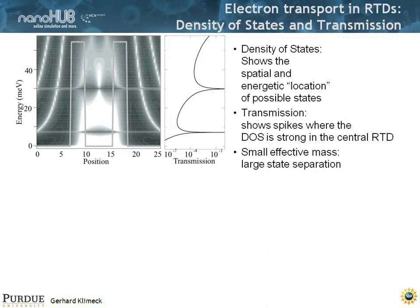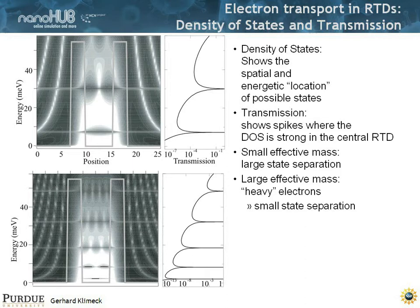If I make my effective mass smaller, I can basically pack more states in my particle-in-a-box. My states are separated at smaller energy differences, so I'm starting to pack them in tighter. If the effective mass is lower, they get down lower in energy. And if the effective mass of the barrier is also heavier, the barrier is less transparent, so these transmission coefficients are much sharper — they dip down by, say, five orders of magnitude here, or ten to eleven orders of magnitude in other cases.